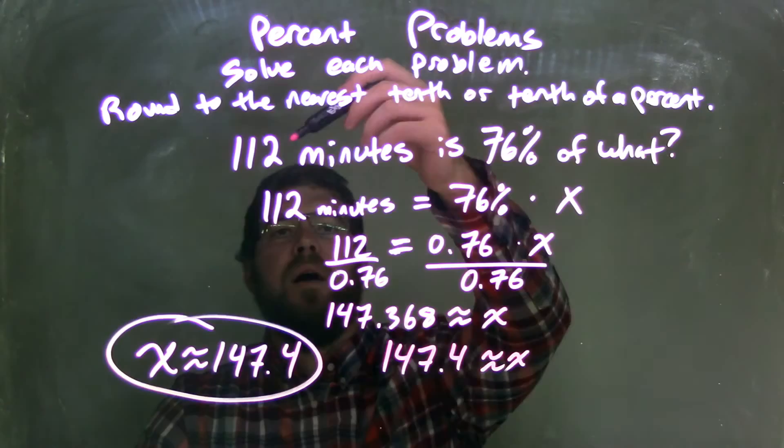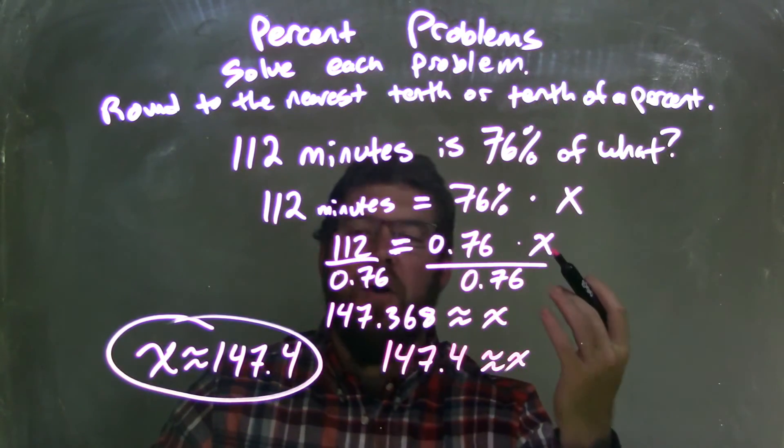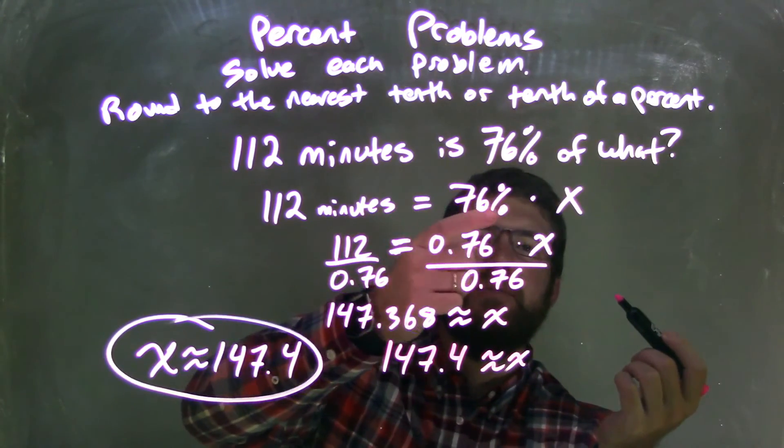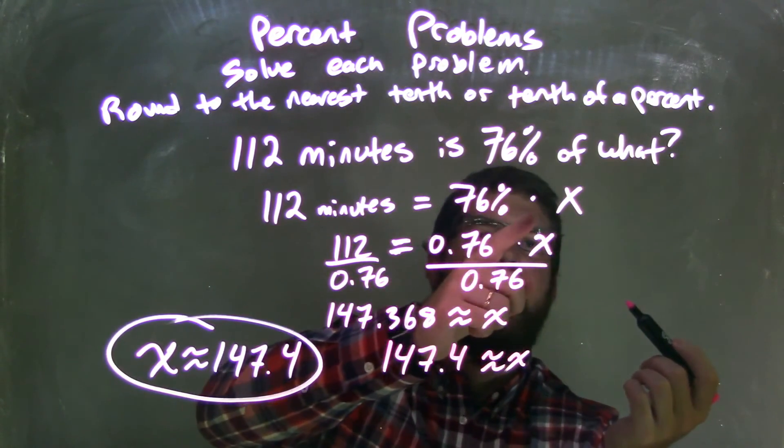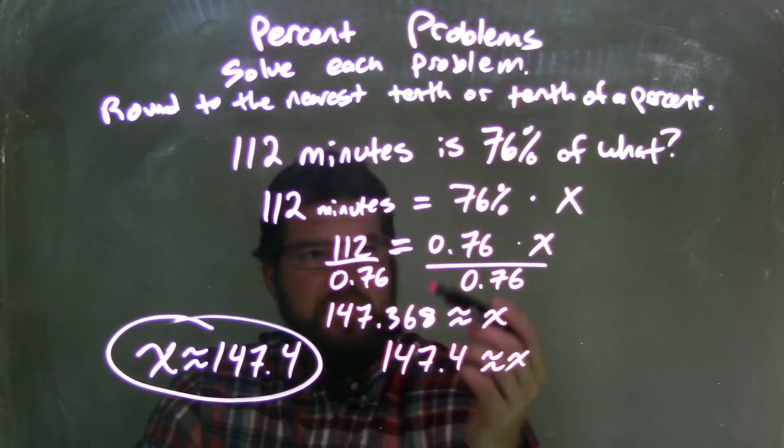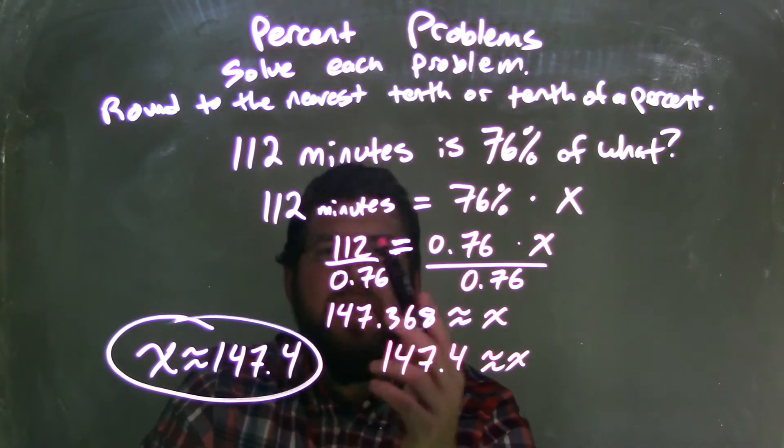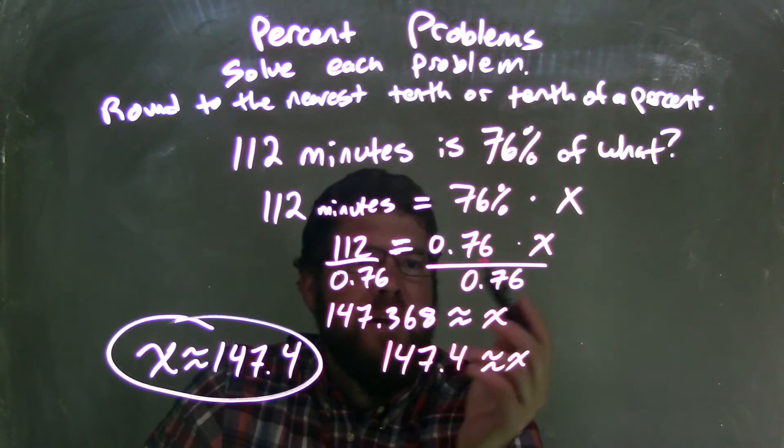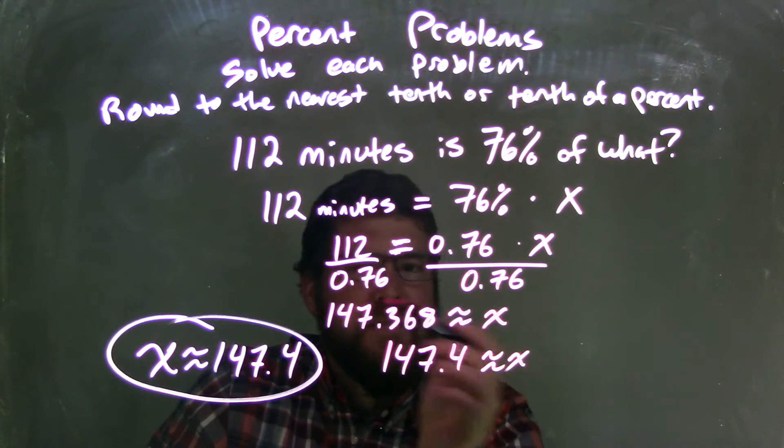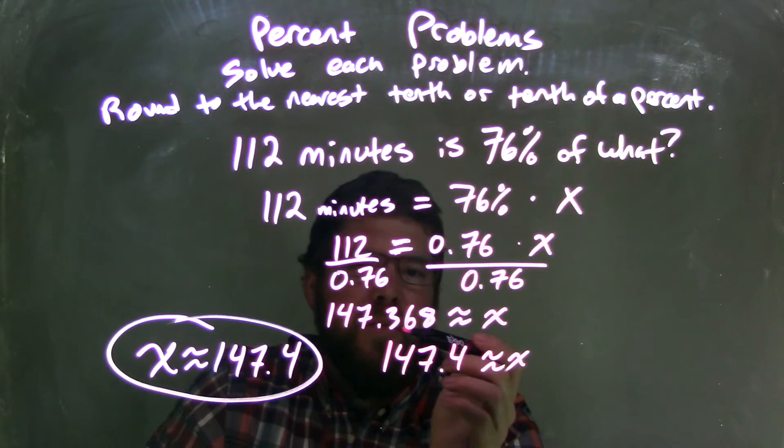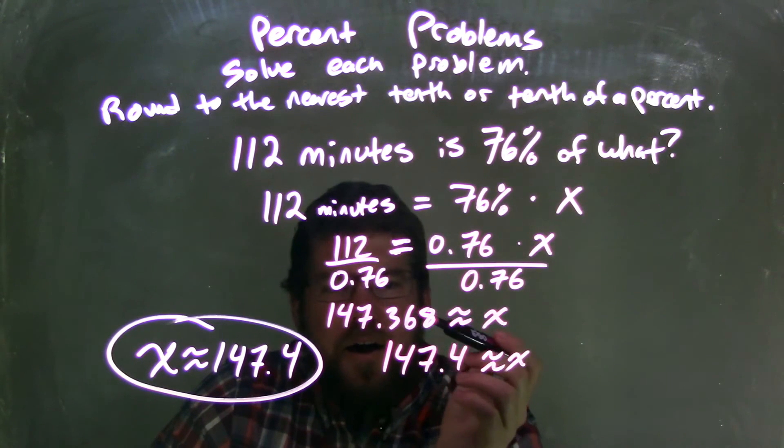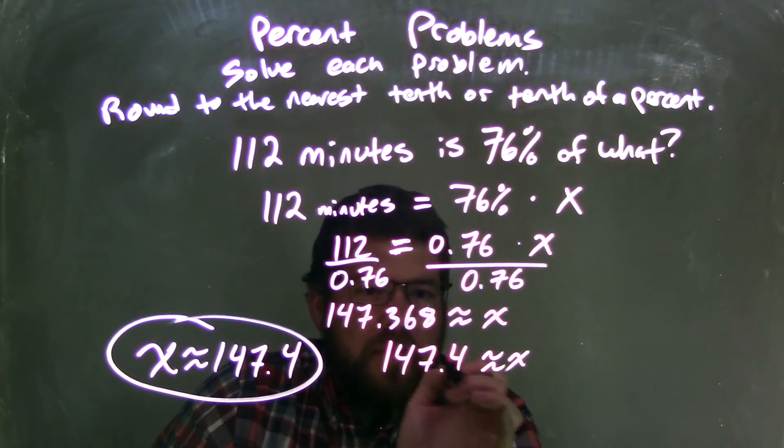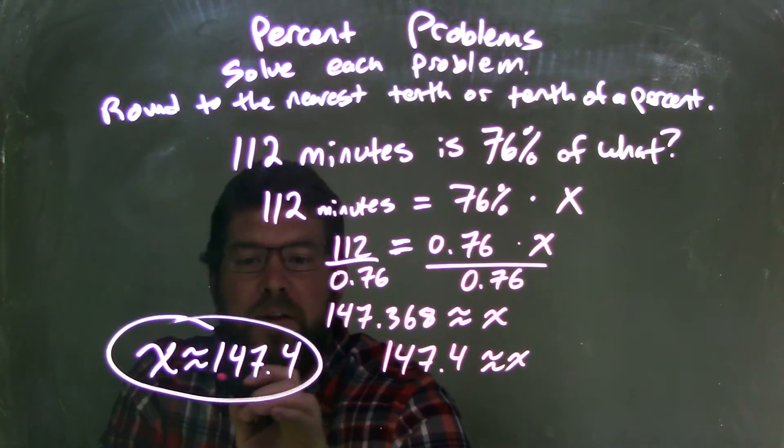Let's recap. We started with 112 minutes is 76% of what? I wrote that as an equation: 112 minutes equals 76% times what, x. I then converted the 76% to a decimal. From there, I had to divide both sides by 0.76 to get x by itself, giving me 147.368. I rounded that, then rounded it again to get to the nearest tenth. And one thing I forgot here is minutes, my units.